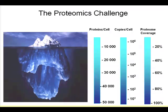The proteome is like an iceberg — it's a lot and it's very complex. In a cell, you can have up to 50,000 different proteins. And if you look at the expression level, they can be as abundant as a million copies, or as little as one or two copies. So the range is huge.